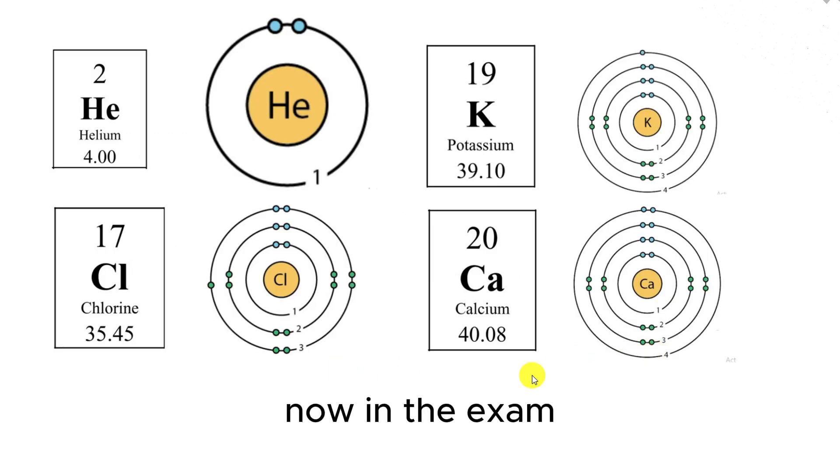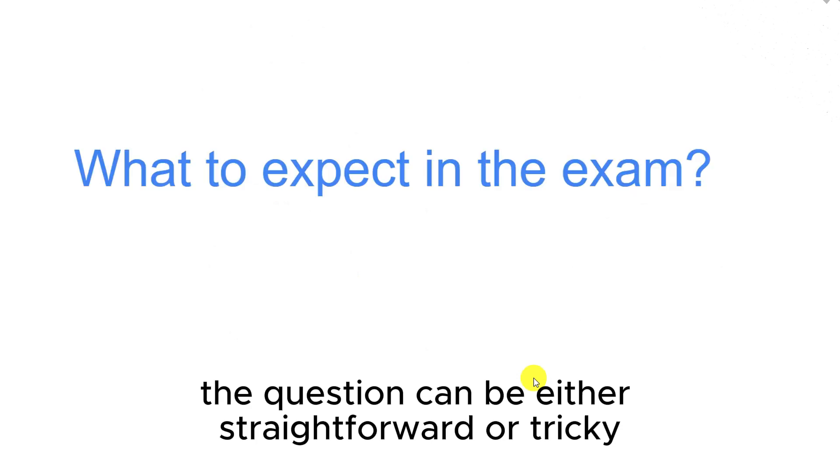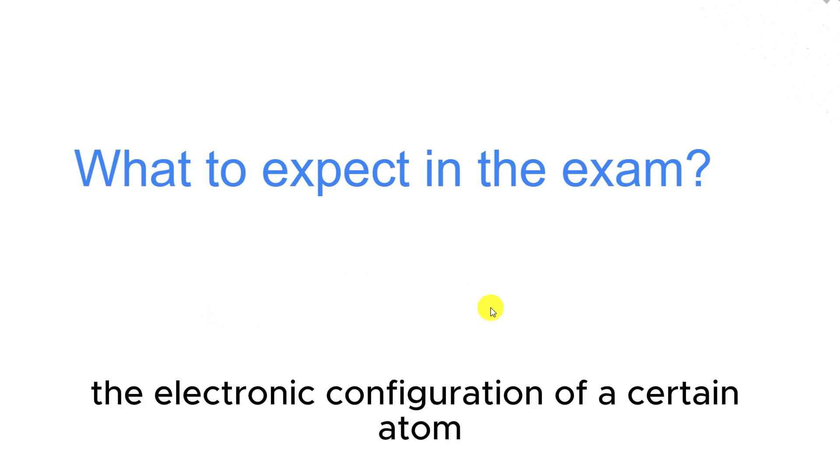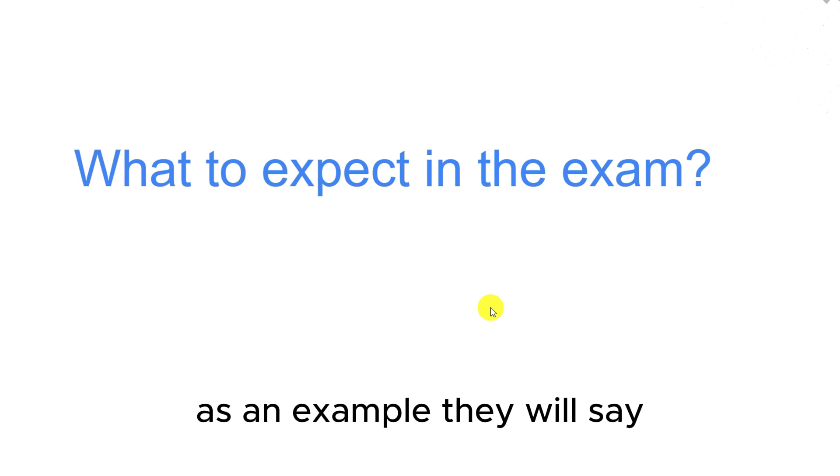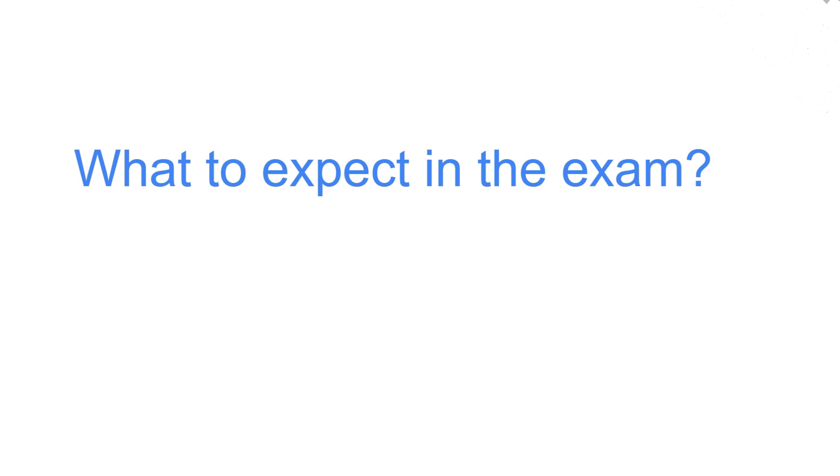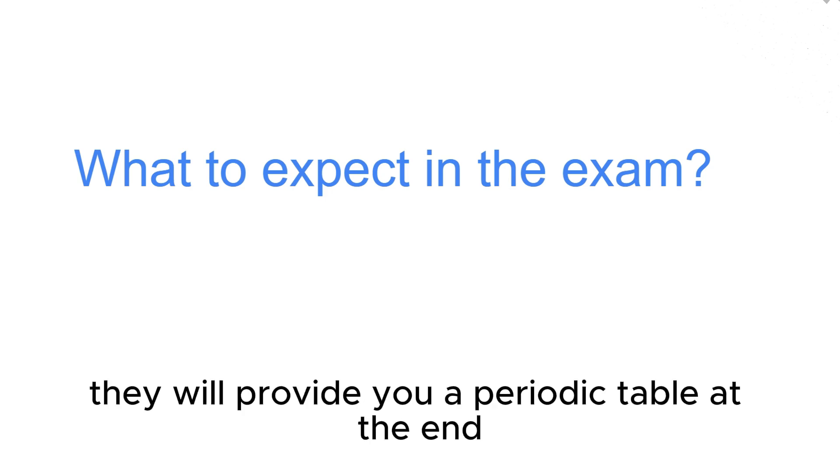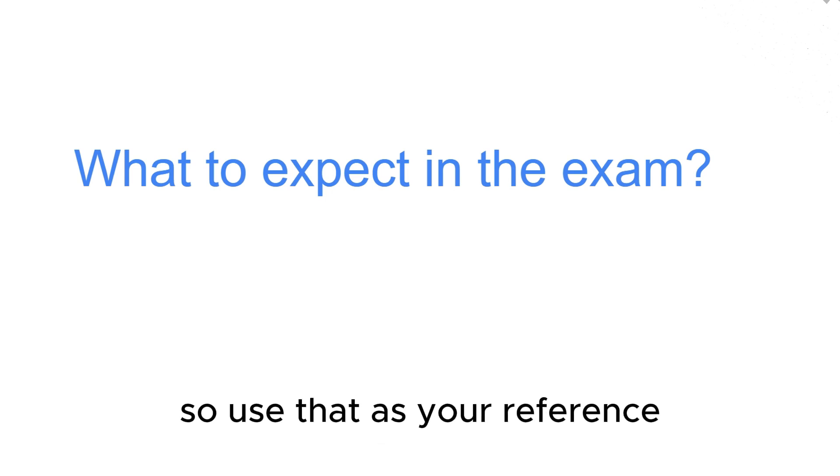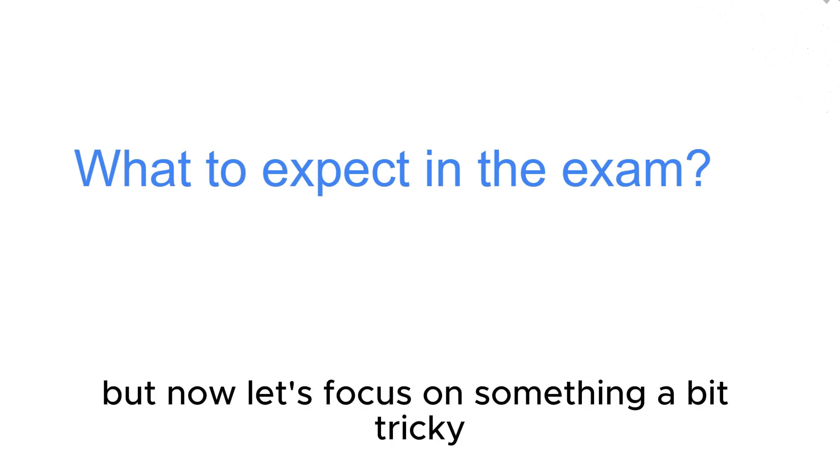Now in the exam, the question can be either straightforward or tricky. Sometimes they can ask you the electronic configuration of a certain atom. As an example, they will say find out the electronic configuration of chlorine. Always remember, in the examinations they will provide you a periodic table at the end. So use that as your reference.